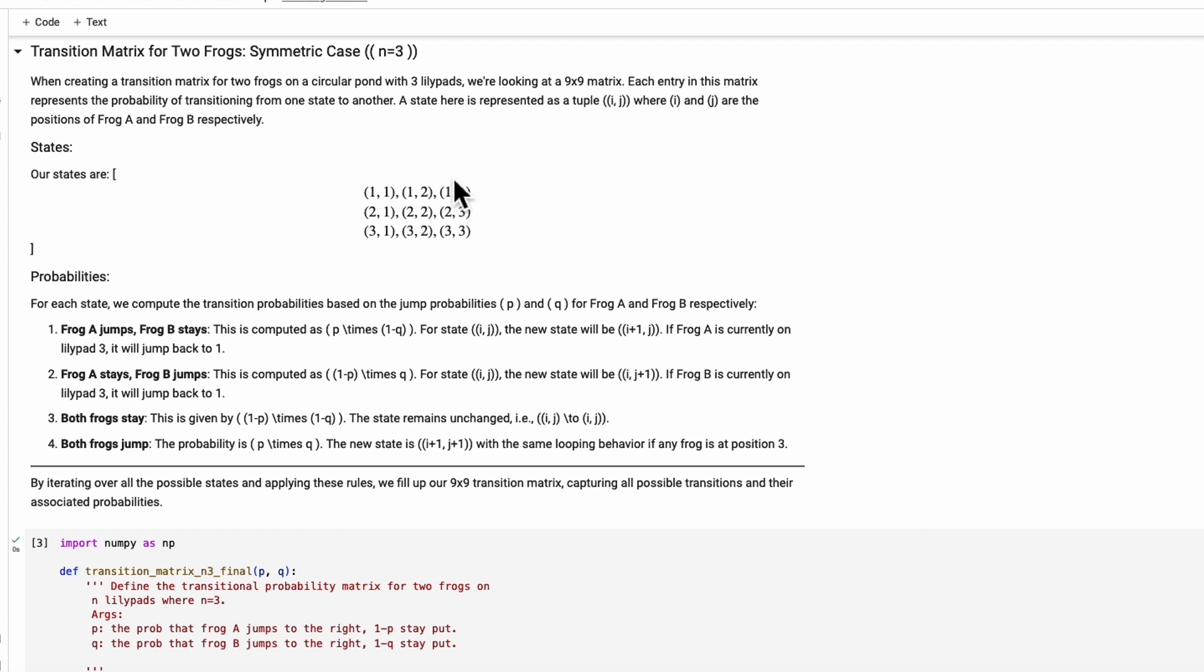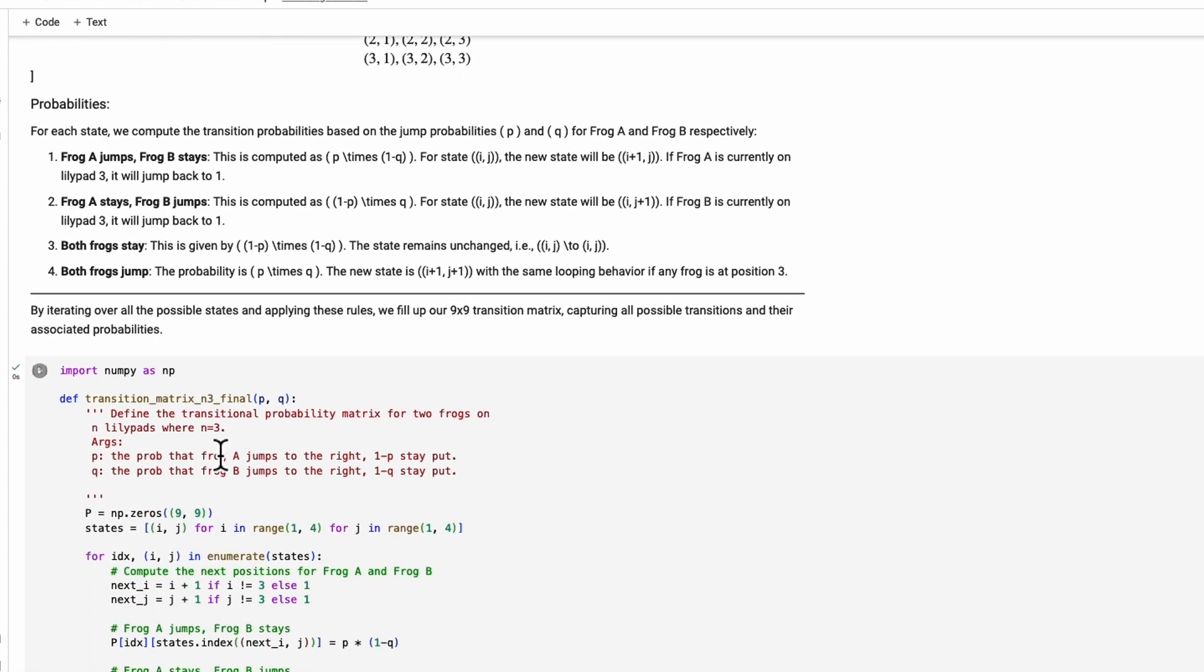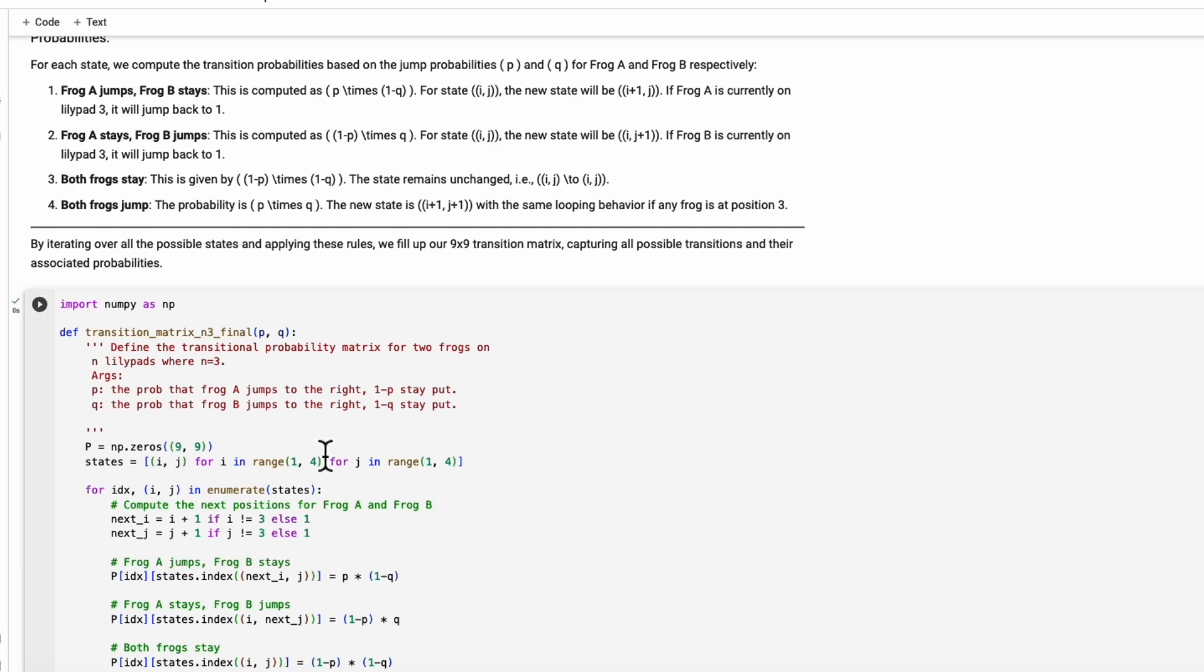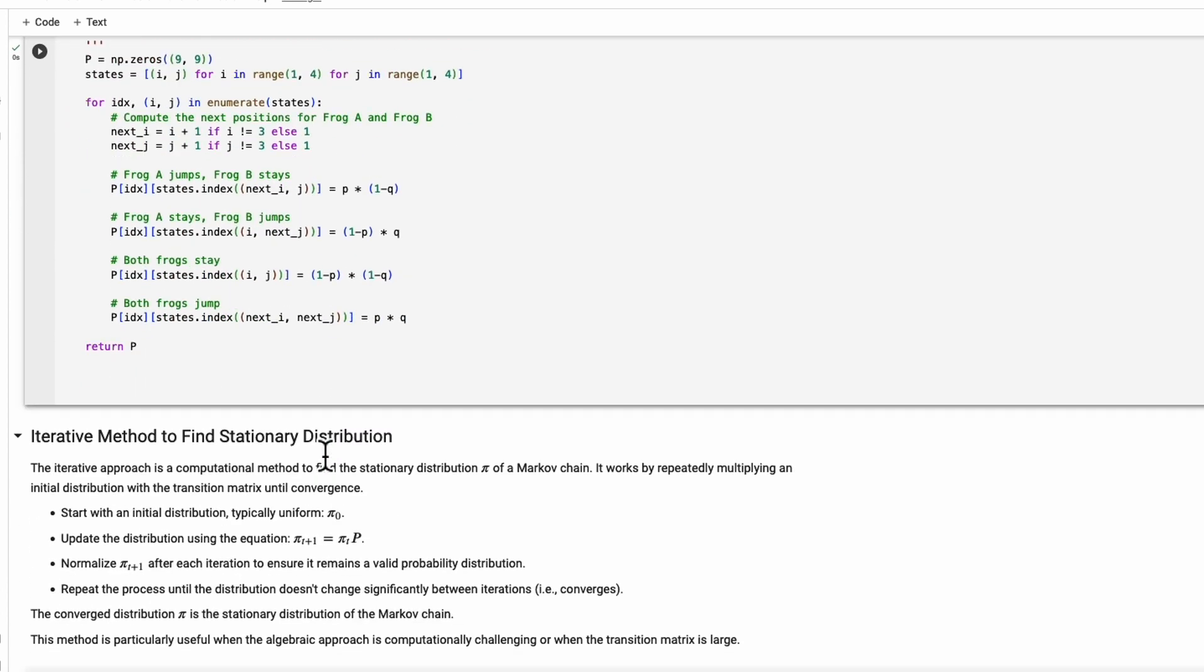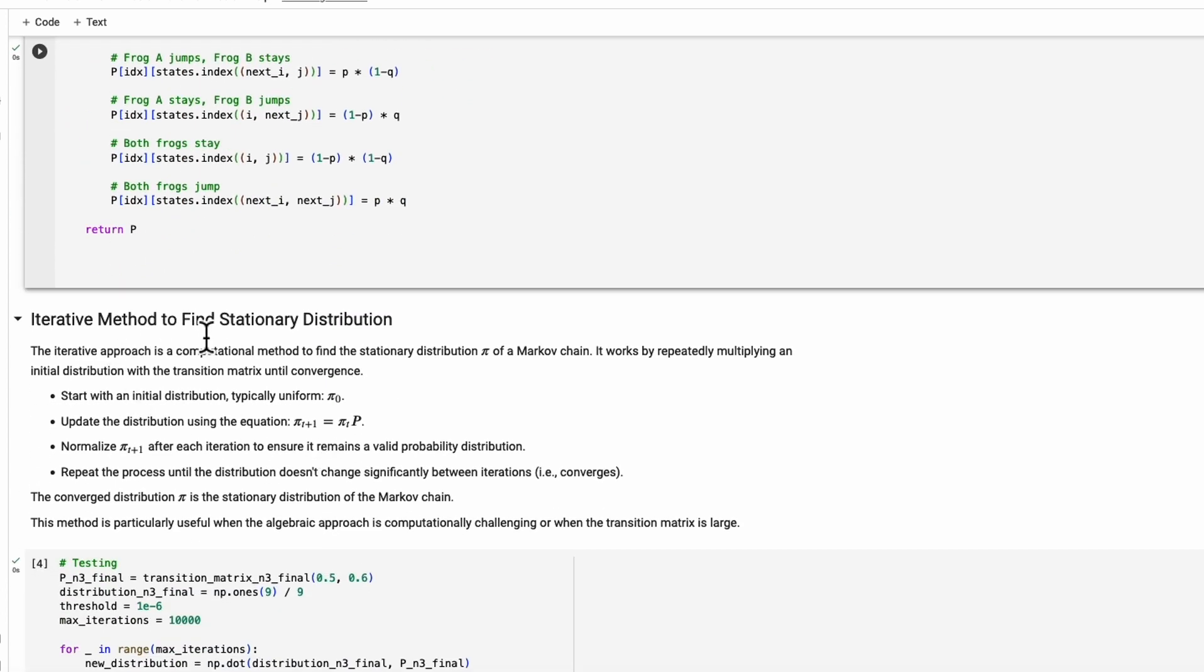So I have a Python program here. We try to define the transitional probability using the rules that we just specified, and then this is the code to generate the transitional probabilities, and then we're going to use an iterative method to find a stationary distribution.